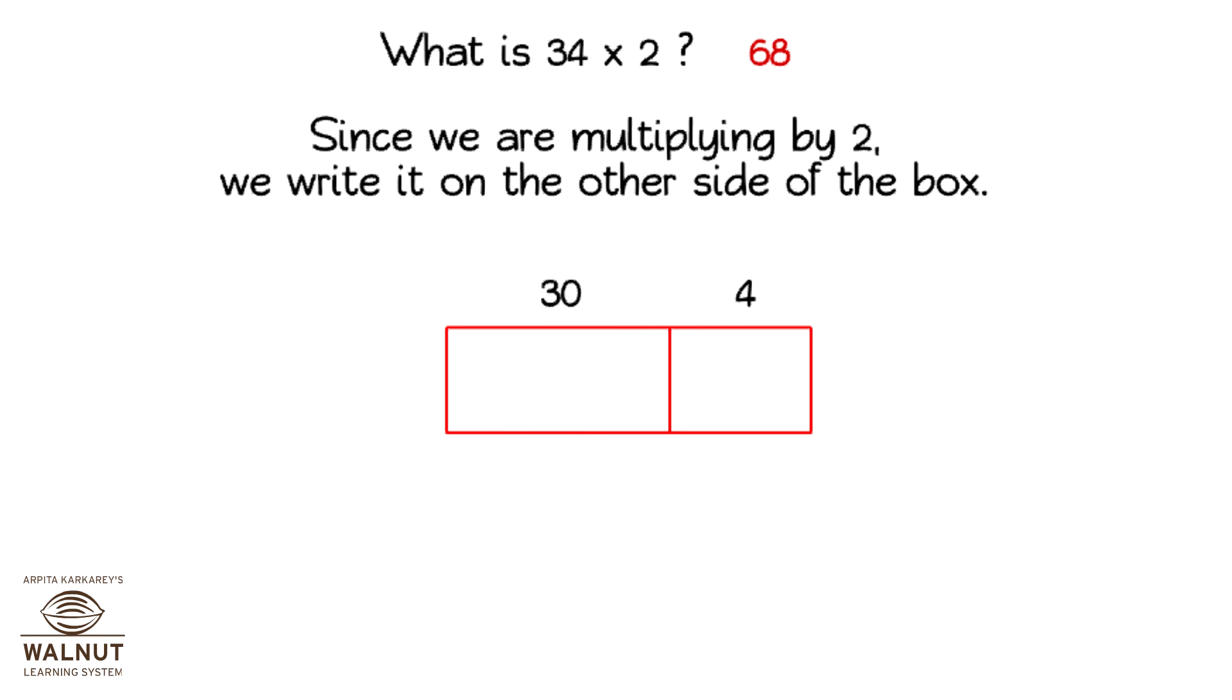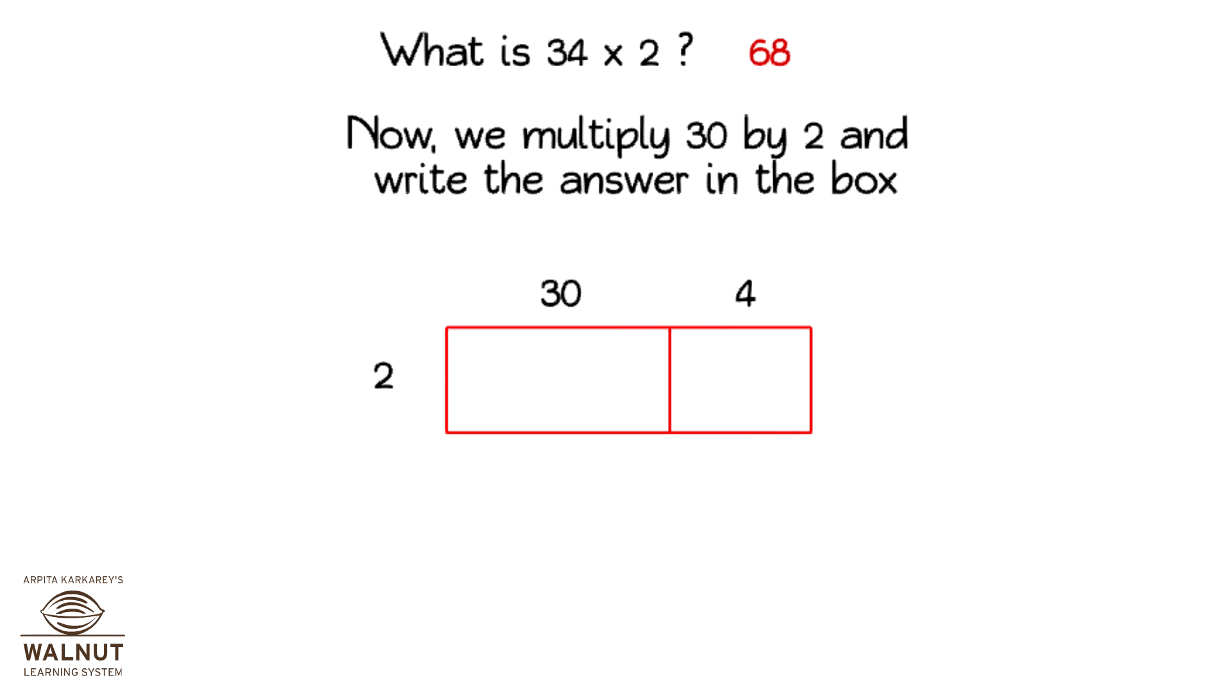Since we are multiplying by 2, we write it on the other side of the box. Now, we multiply 30 by 2 and write the answer in the box.